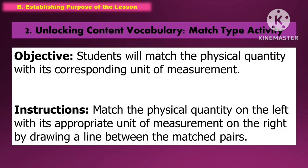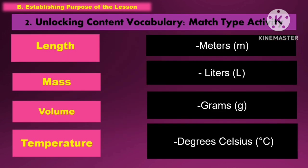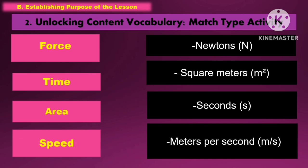In unlocking content vocabulary, we are going to use a match type activity. Students will match the physical quantity with its corresponding unit of measurement by drawing a line between matched pairs. Students are invited to come up one at a time and match a definition card to the appropriate vocabulary term.